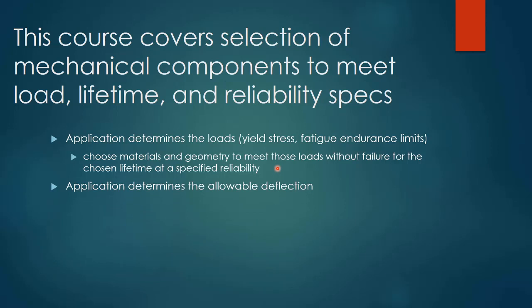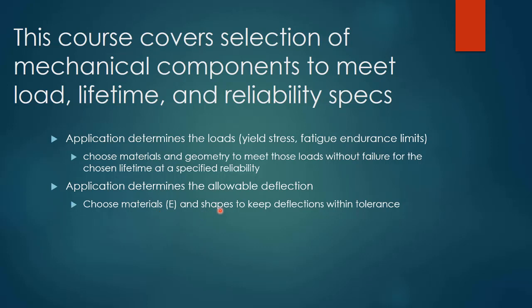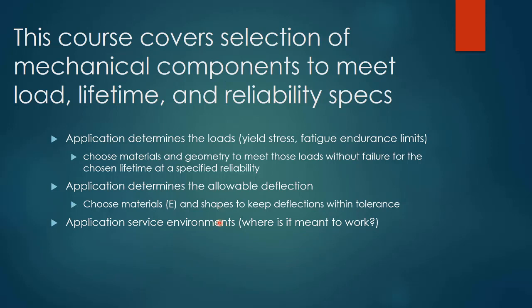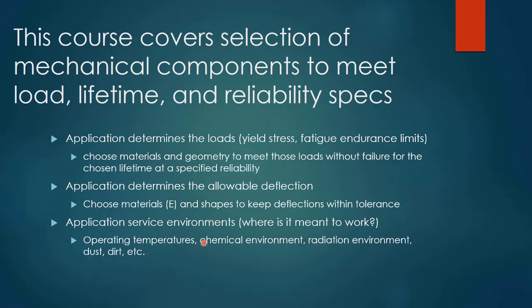The application also determines the allowable deflection. When you build a bridge, how much is the bridge allowed to deflect under the load of the cars? You choose materials with different elastic modulus so that they can be stiffer and won't deflect as much, and you choose the cross-sectional shape to keep the deflections within tolerance. The application service environment also matters — where is this thing supposed to work? Is it in a clean room or outside in an agricultural setting? That changes a lot of your design criteria. Operating temperatures, chemical environment, radiation environment, dust, dirt — all of that changes the way you design that machine.